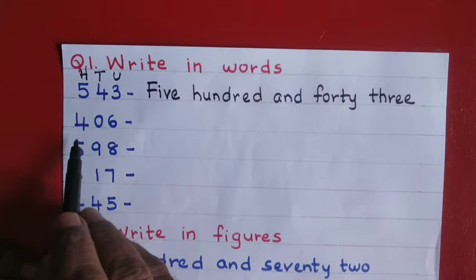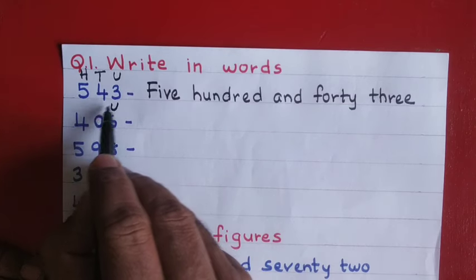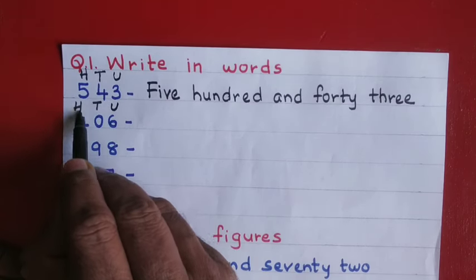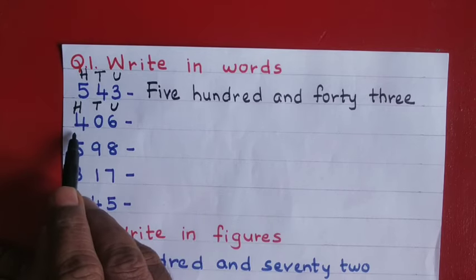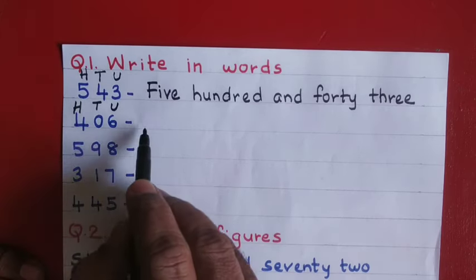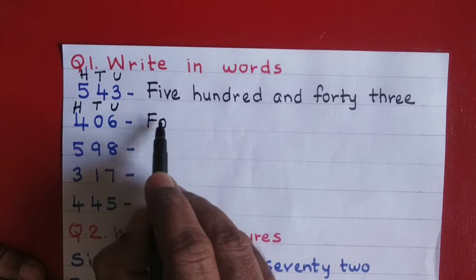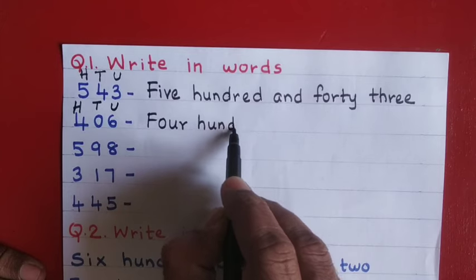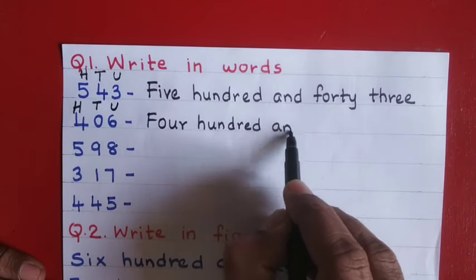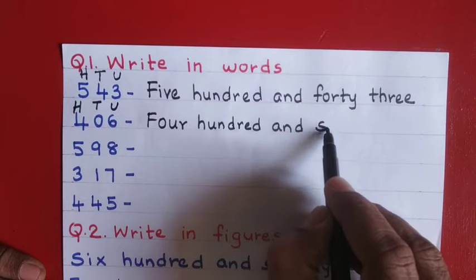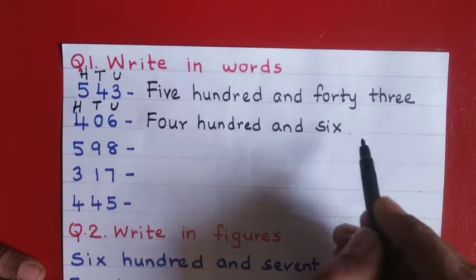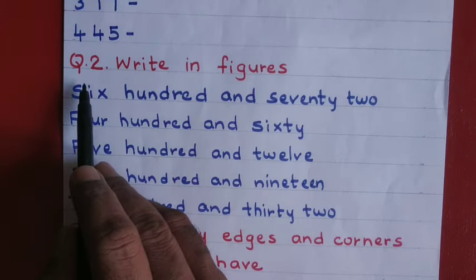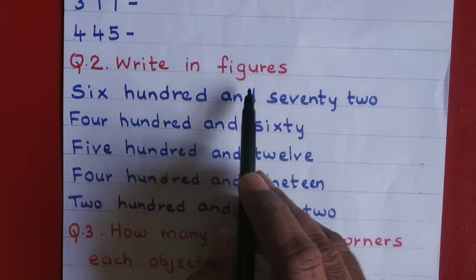For the next one, first write the places — hundreds, tens, and units — then read the number: four hundred and six. Four hundred and six. You can try this one on your own. Question number two: write in figures.